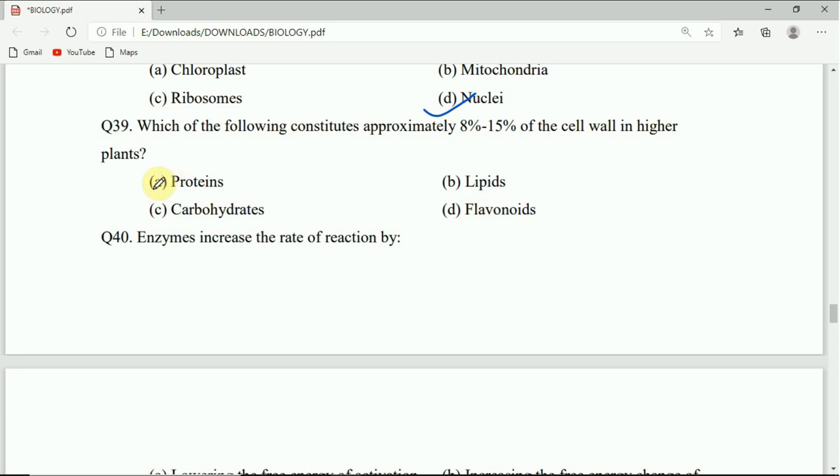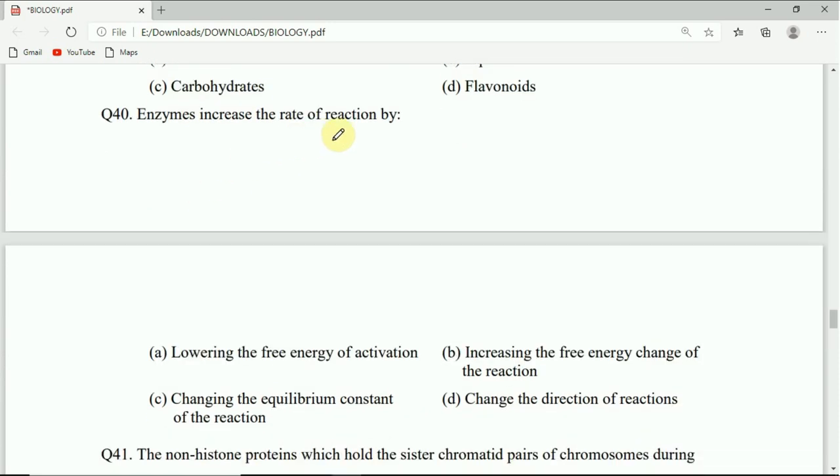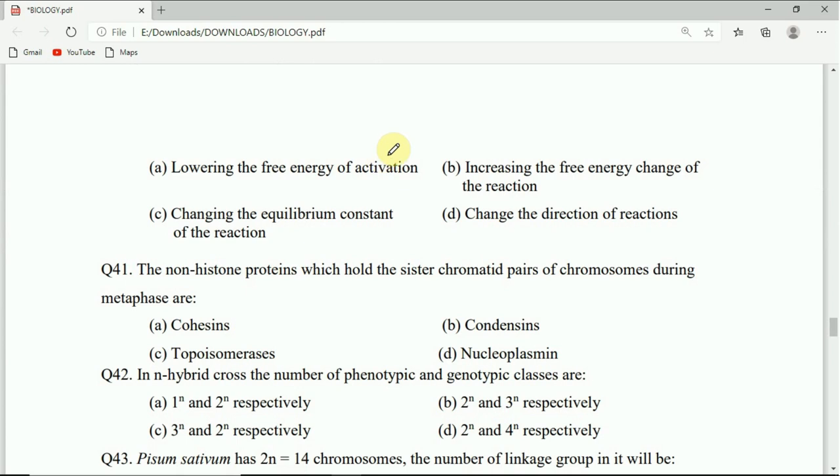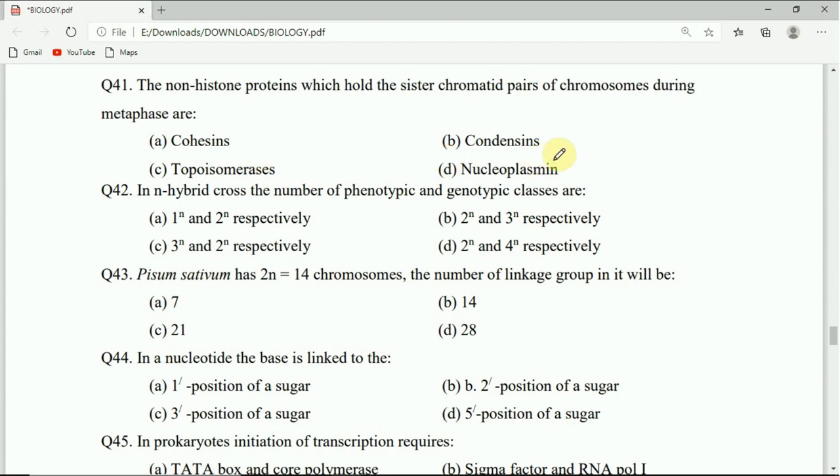Question 40: Enzymes increase the rate of reaction by lowering the free energy of activation, increasing the free energy change, changing the equilibrium constant, or changing the direction of reactions. Correct answer is A. Question 41: The non-histone proteins which hold the sister chromatid pairs of chromosomes during metaphase are cohesins, condensins, topoisomerases, or nucleoplasmin. Correct answer is cohesins.